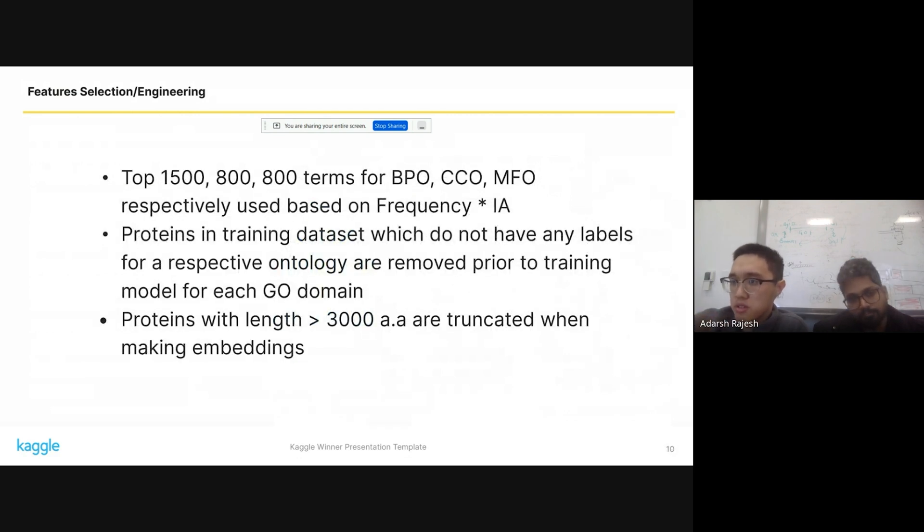A bit more detail in terms of how we did the feature selection, we used 1,500 terms for BPO and 800 terms for CCO and MFO. We selected the terms based on a simple multiplication of frequency in the training data set to the IA value, which is the weight of how valuable predicting that term is. During training, any proteins that did not have labels for their respective ontology would be dropped during the training of that respective model. And when we generate embeddings for our proteins, due to computational constraints, we truncated any proteins with length of over 3,000 amino acids when making embeddings.